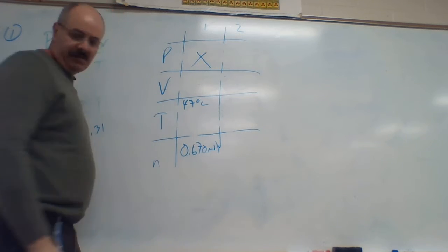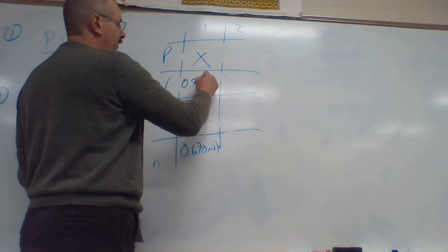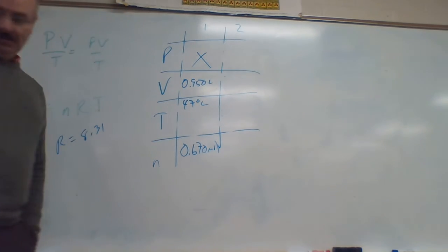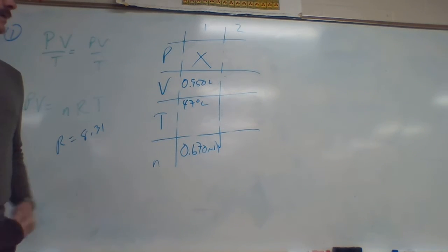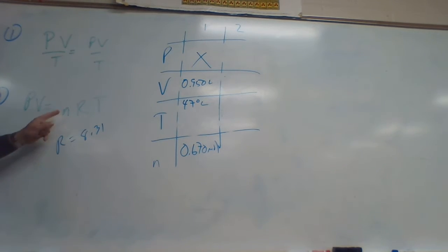If it's contained in a 0.950 liter vessel. In other words, container. So, again, we only got side number one. There's nothing on side number two. So, we're using equation number two.